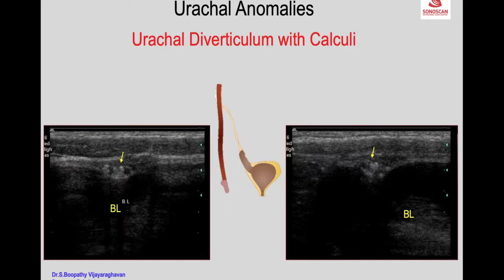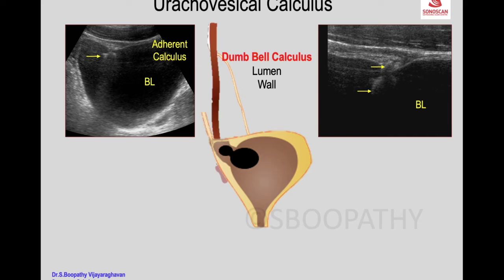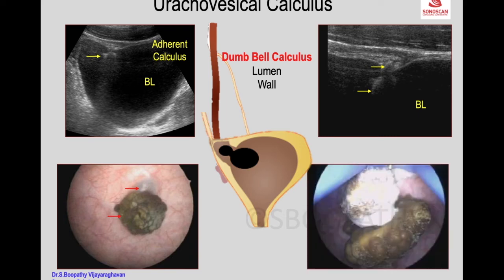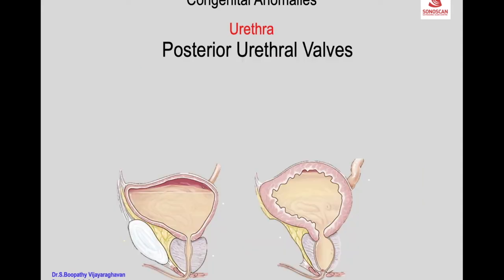Urachal anomaly can be associated with calculus. Here, the bladder shows a urachal diverticulum with calculi in it on both sagittal and transverse scans. On cystoscopy, you see the component of the calculus within the urinary bladder and that within the urachovesical diverticulum. After removal, you see the typical dumbbell shape, confirming urachal carcinoma.